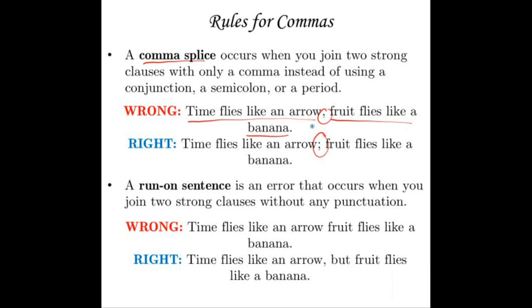A run-on sentence is an error that occurs when you join two strong clauses without any punctuation — you've stuck two sentences together with no glue at all. For example: "Time flies like an arrow fruit flies like a banana" — if you get to the end and can't breathe, it's probably a run-on. The correct versions are either "Time flies like an arrow; fruit flies like a banana" or "Time flies like an arrow, but fruit flies like a banana."